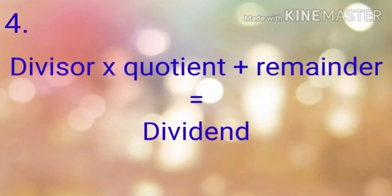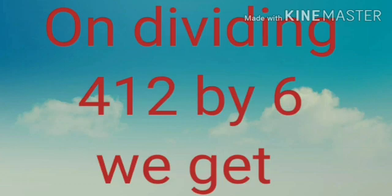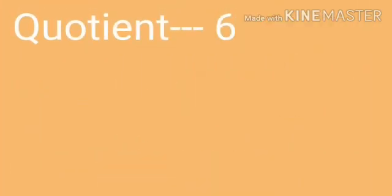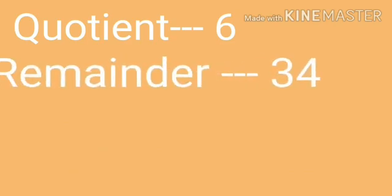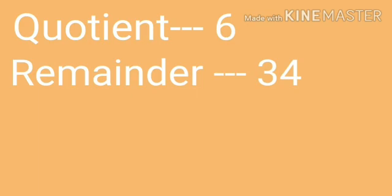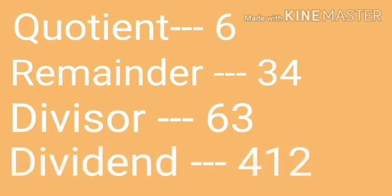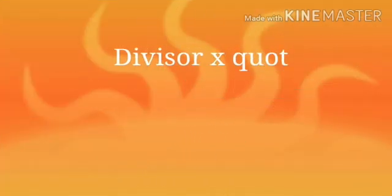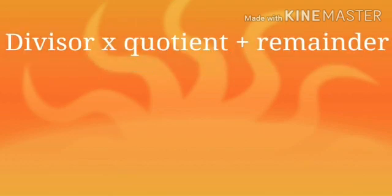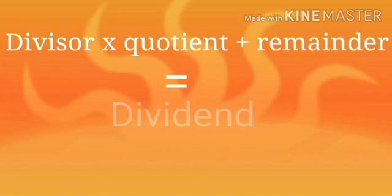Next, when the product of the divisor and quotient is added to the remainder, we get the dividend. For example, on dividing 412 by 6, we get a quotient of 6, a remainder of 34, divisor is 63, and the dividend is 412. So divisor multiplied by quotient, when added to the remainder, gives the dividend. This forms our fourth property.